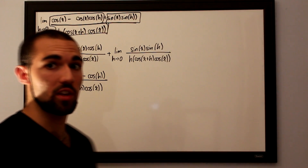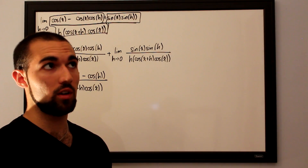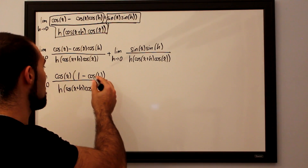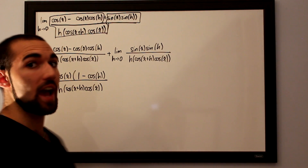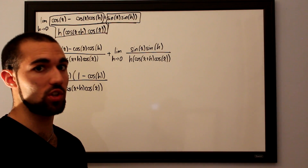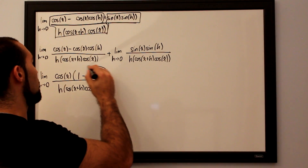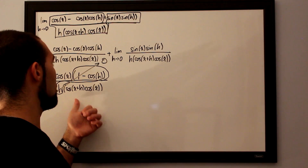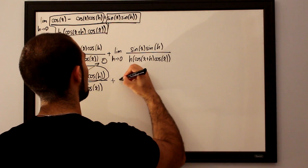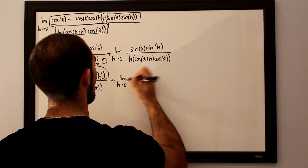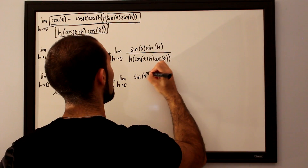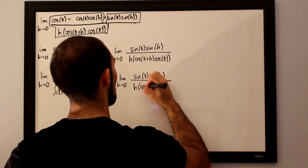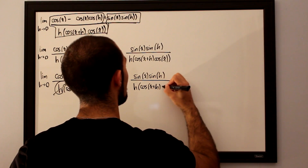Using the known trigonometric limit that the limit as h approaches 0 of 1 minus cosine of h over h equals 0, this entire first limit goes straight to 0. We then add the second limit as h approaches 0 for sine of x times sine of h, divided by h times cosine of x plus h times cosine of x.